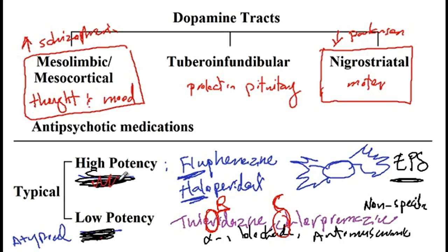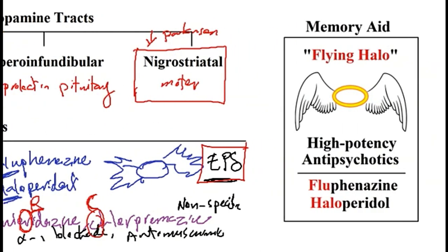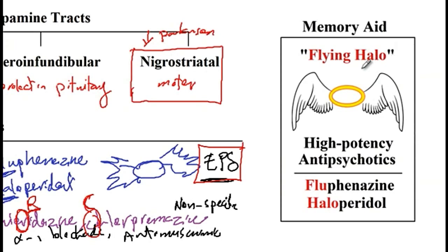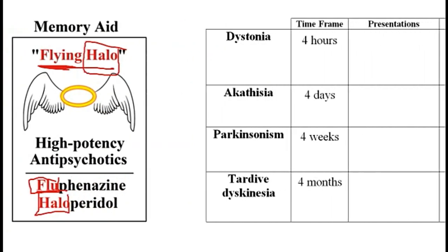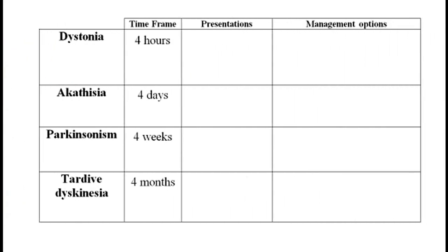For the high potency medications, there are very few nonspecific effects, but they are mainly associated with extrapyramidal side effects. As mentioned, fluphenazine and haloperidol are high potency antipsychotics — the mnemonic is flying halo. The extrapyramidal side effects include dystonia, akathisia, Parkinsonism, and tardive dyskinesia, occurring at four hours, four days, four weeks, and four months respectively.